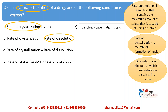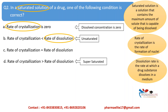Option B — rate of crystallization less than rate of dissolution — is true for an unsaturated solution, where the solution contains less than the maximum amount of solute capable of being dissolved. Option C — rate of crystallization greater than rate of dissolution — is true for a supersaturated solution, in which more solute is dissolved than the necessary amount. Option D — rate of crystallization equal to rate of dissolution — is true for a saturated solution. So the correct answer is option D.